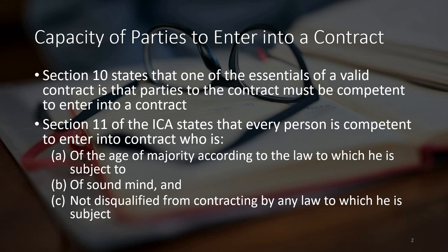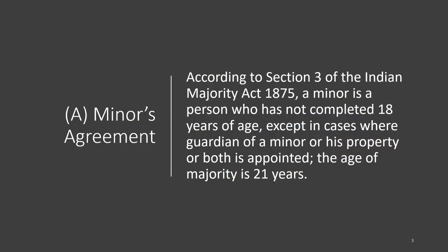These are the persons eligible to enter into a contract. Now, when we say somebody who has attained the age of majority, Section 11(a) deals with minors' agreements. Who is a major and who is a minor? We know that from the Indian Majority Act 1875. According to Section 3 of the Indian Majority Act 1875, a minor is a person who has not completed 18 years of age — this is the benchmark.